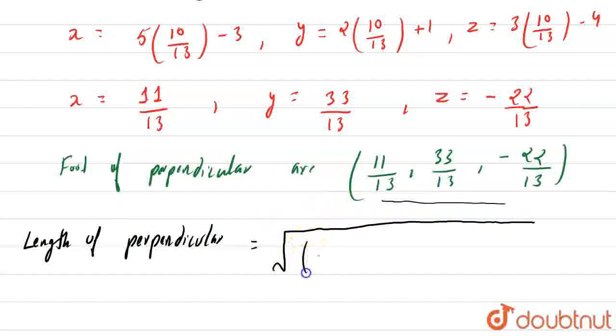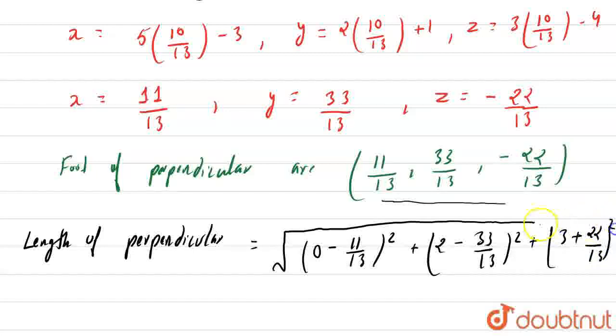First coordinate is our (0,2,3). So √[(0 - 11/13)² + (2 - 33/13)² + (3 - (-22/13))²].